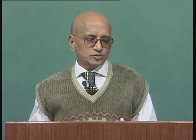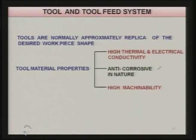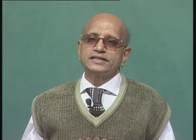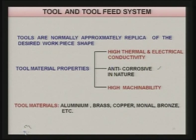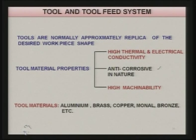Another important property is high machinability, especially when you want to machine a complex shaped component. Before machining the work piece, you have to make the tool of complex shape, and for that the tool material should be easily machinable. Normal tool materials used in ECM are aluminum, brass, copper, monel, bronze, etc. — all of which have high thermal conductivity, high electrical conductivity, anti-corrosive nature, and are easily machinable. Depending on cost and other considerations, one of these materials can be chosen as the tool material.